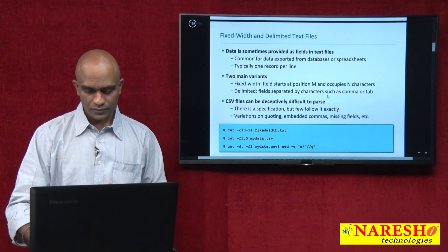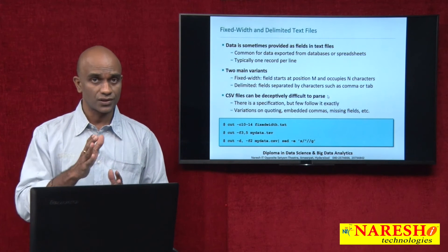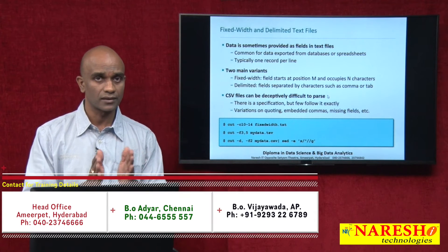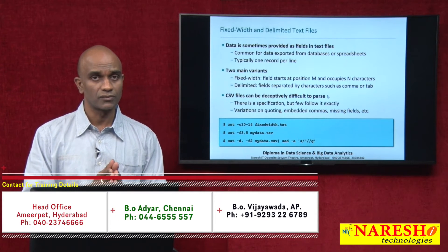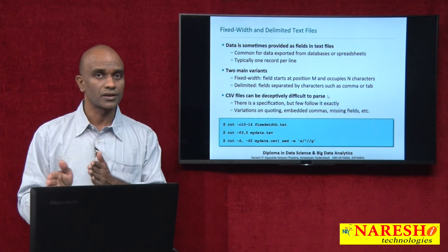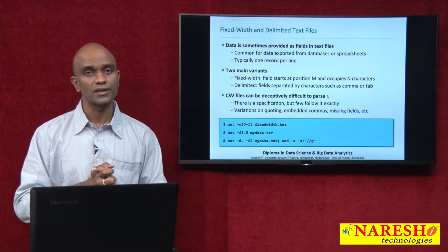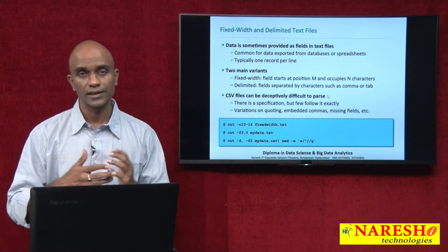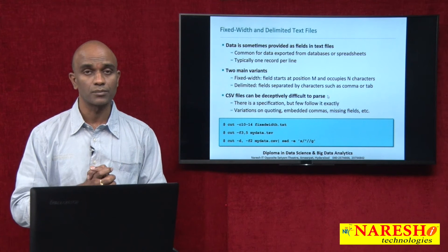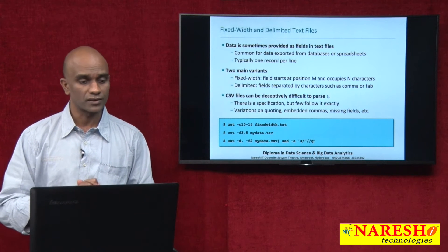Moving on, we have fixed width and delimited text files. Fixed width data generally comes from mainframes and tends to have a fixed width whether or not the fields contain data. Then we have delimited text files — delimited text files are your CSV files or whatever delimiter your standard process maintains across an application.